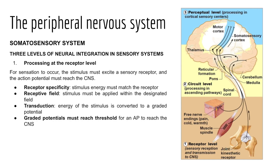Third, transduction must occur: the energy of a stimulus must be converted into a graded potential, sometimes called the receptor potential, which opens or closes ion channels, converting the stimulus into an electrical signal that proceeds to the circuit level. Fourth, those graded potentials in the associated sensory neuron must reach threshold — only then will an action potential send the message to the next level of the somatosensory system.